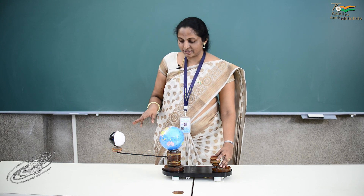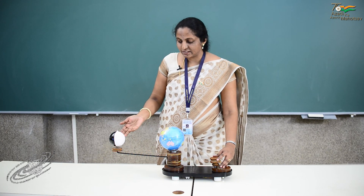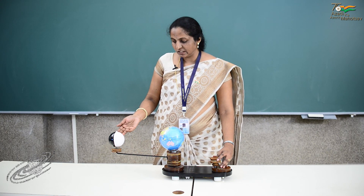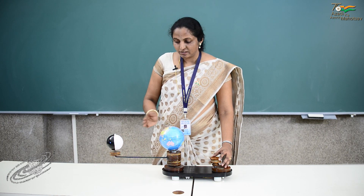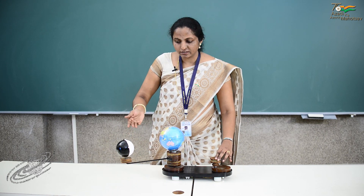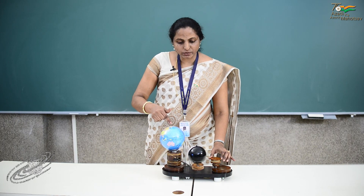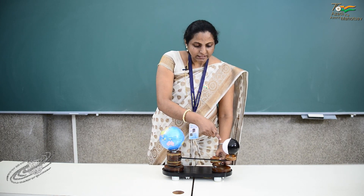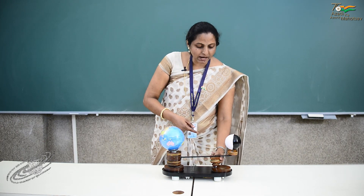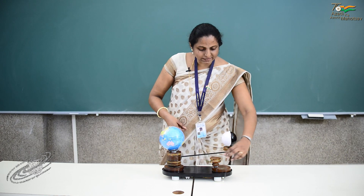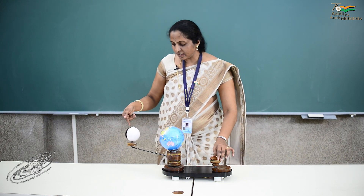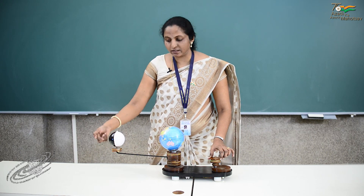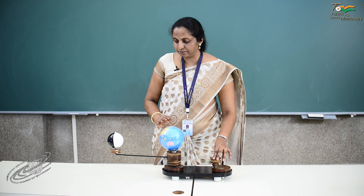But our moon is going around the earth in a different manner. Let us take our moon around the earth — this is our moon, this is our earth. Now the moon is going around the earth. For a person standing on the earth, this white part is the part that is always facing towards him, and you can see that this black part is never seen by a person standing on the earth.